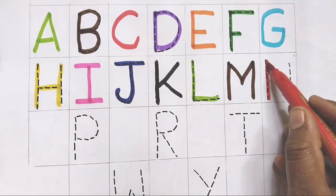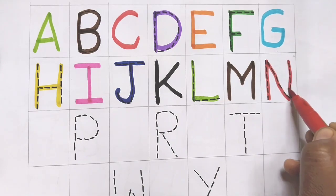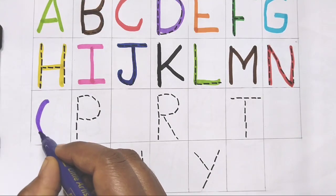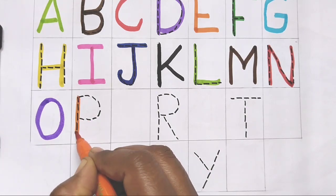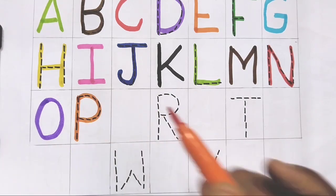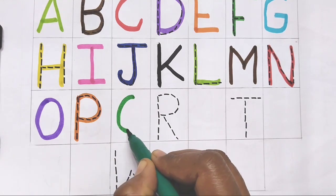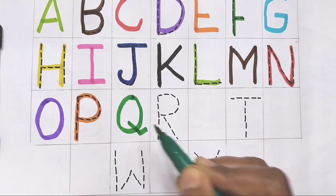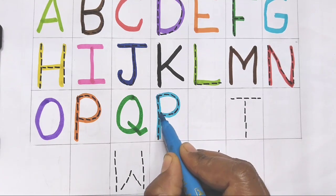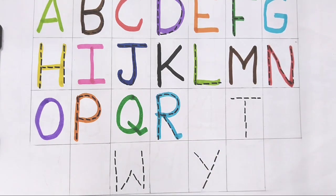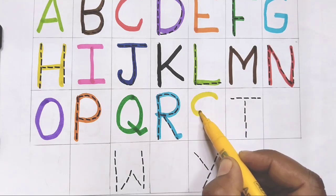N. N for nose. O. O for onion. P. P for pig. Q. Q for queen. R. R for red. S. S for sun.